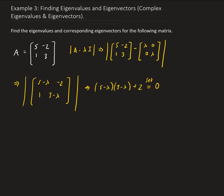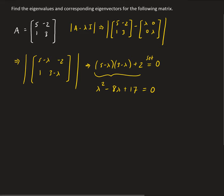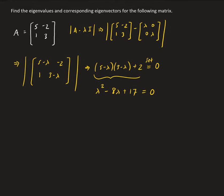So expanding on this, we're going to get lambda squared minus eight lambda plus 17. We're going to use the quadratic formula, because it turns out that these eigenvalues are going to be complex. So we get lambda equals four plus i, and lambda equals four minus i. These are complex conjugate pairs.